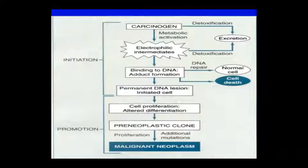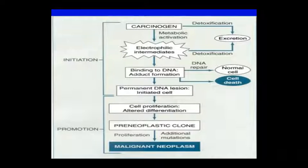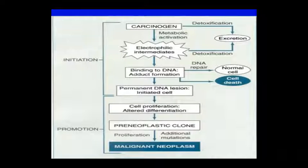The cell will not be differentiated — as we have said, in neoplasia, poor differentiation and ill differentiation are found. The differentiation will be altered and it becomes a pre-neoplastic clone. This clone will proliferate more, accumulate more mutations, and finally be converted into cancer — a malignant neoplasm. This initial step is called initiation, and when the cell proliferates it is called promotion.